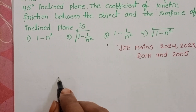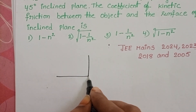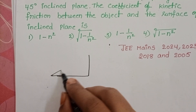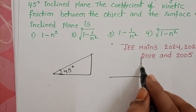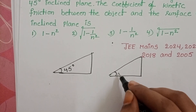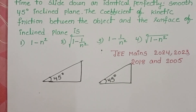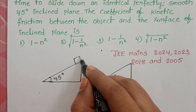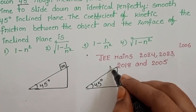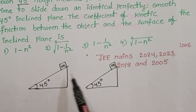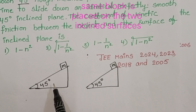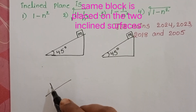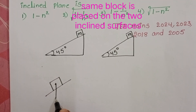In the given question, the first inclined plane is a smooth inclined plane with angle of inclination 45 degrees, and the second inclined plane is a rough inclined plane, also at 45 degrees. On these two inclined planes, we place a body of mass m. The block is the same and the length of the inclined planes is also the same — the only difference is one is smooth and the other is rough.